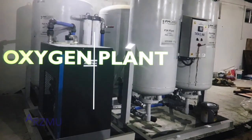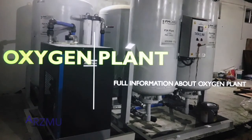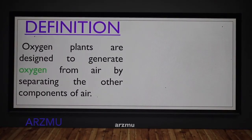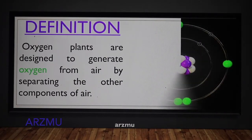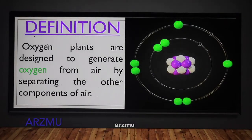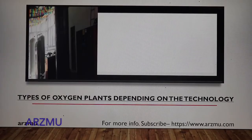An oxygen plant is used in the production of pure oxygen or high concentration of oxygen. The definition of an oxygen plant is the design used to generate oxygen from air, by separating the other components of air.